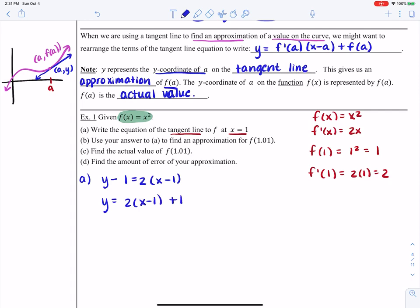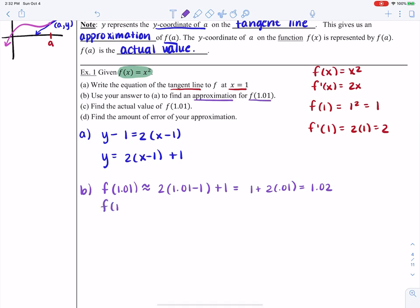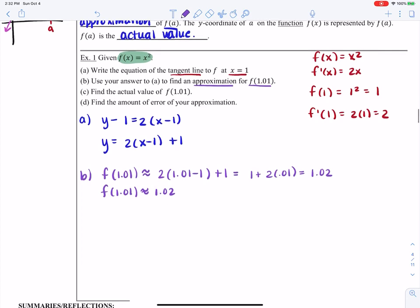Now let's say in part b, I want to now use this tangent line for something. Let's say I want to use this tangent line to find an approximation for f of 1.01. So f of 1.01 is now going to be approximated by plugging in 2 times 1.01 minus 1 plus 1, which should give us about 1 plus 2 times 0.01 or 1.02.